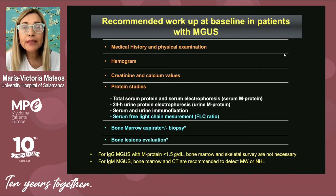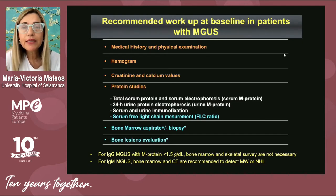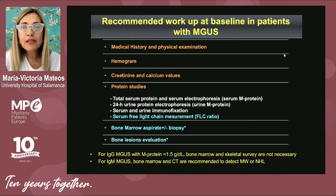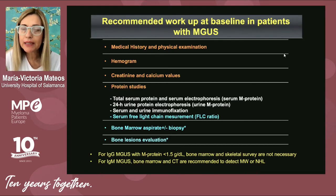It is recommended to perform bone marrow aspirate plus or minus biopsy to evaluate how many plasma cells are infiltrating the bone marrow. We also need to evaluate the bone disease. For this, the optimal assessment is low-dose CT, PET-CT, or MRI, reserving x-ray only if no other option is available.